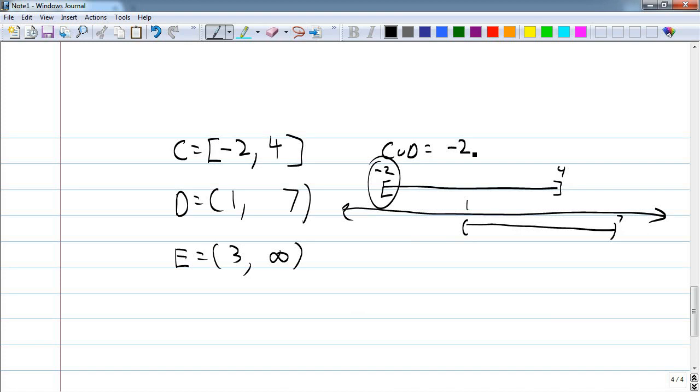Their union is what's in C or D. So think about all of the numbers that are in C or D. What's the lowest number? -2. What's the highest number? 7. Is -2 included in the interval? Yes, because it's a bracket. How about 7? No, because it's a parenthesis. So that's C union D.